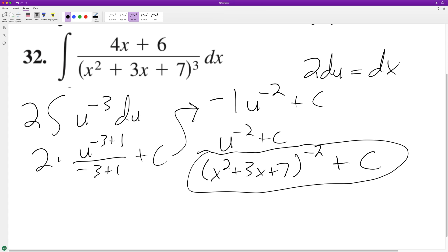So we'll take the derivative of that, negative two times two x plus three. And then this becomes x squared plus three x plus seven raised to the negative three.